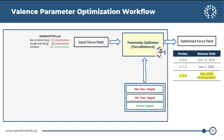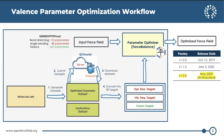We start from SMIRNOFF99Frosst, which Christopher adapted from AMBER99 and PARMFROSST. We input the data and use regularized least squares optimization, implemented in the ForceBalance software, which outputs an optimized force field. For the targets we input into ForceBalance, we start from molecule sets. For the previous releases, we used the Roche set and coverage set, and we generated the optimized geometry dataset and torsion drive datasets with certain criteria. We submit the data to QCFractal, and once calculations are done, we download the dataset and convert it into ForceBalance-readable targets.